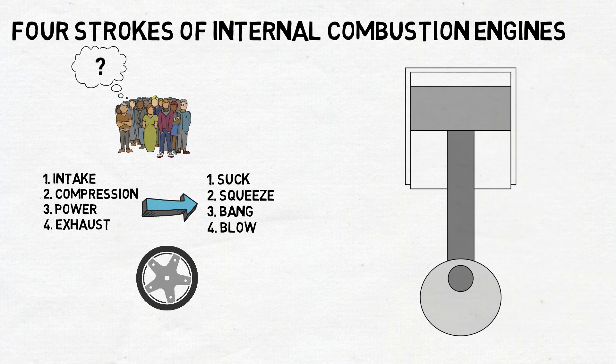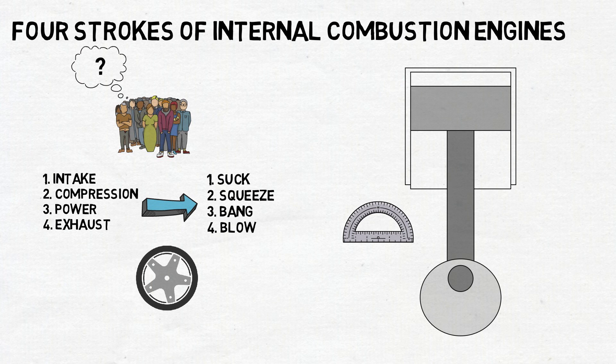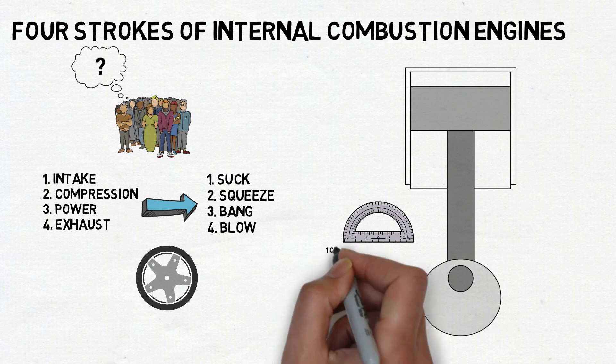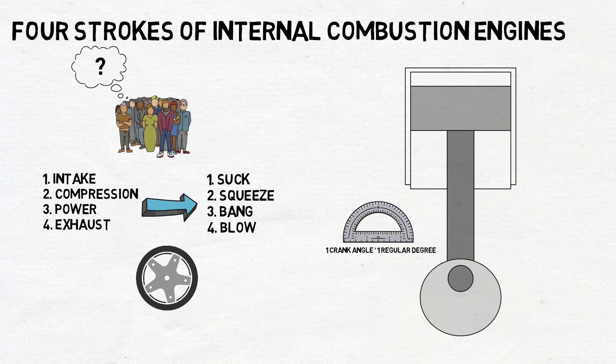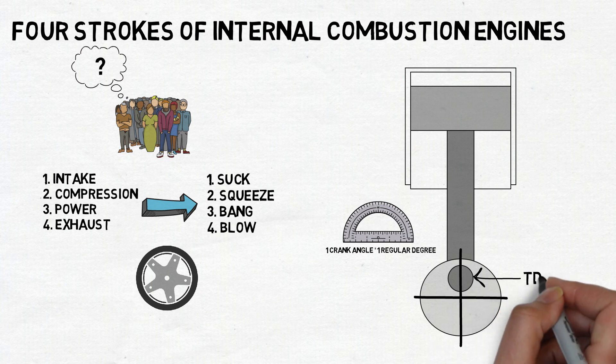To understand them a little better we need to define a unit of measurement widely used in the automotive industry. The crankshaft angle or crank angle for short equals one regular degree and it's used to describe the piston travel position. When the piston is at its highest point it's called top dead center and it's said to be at zero crank degrees.